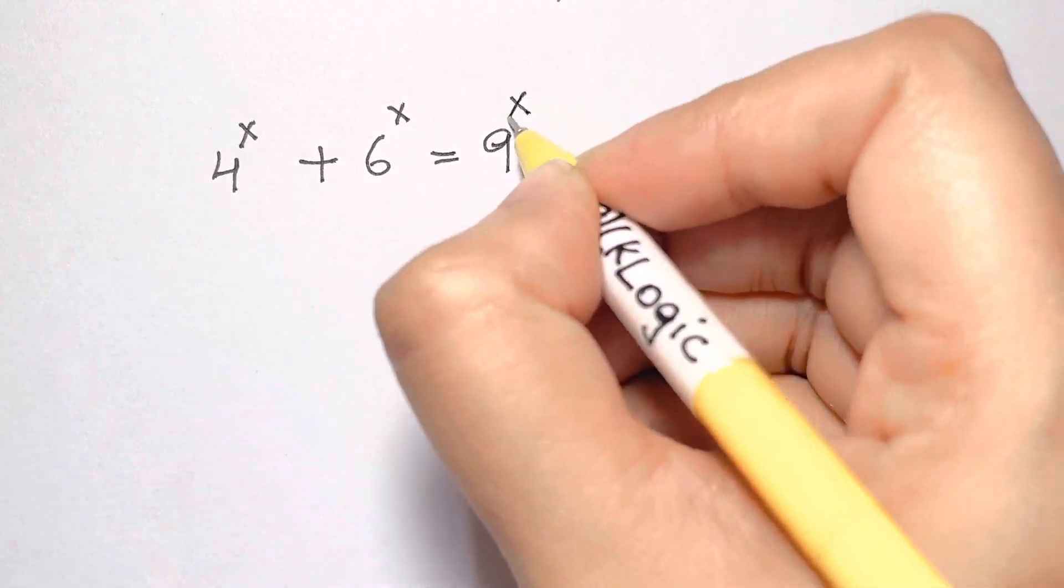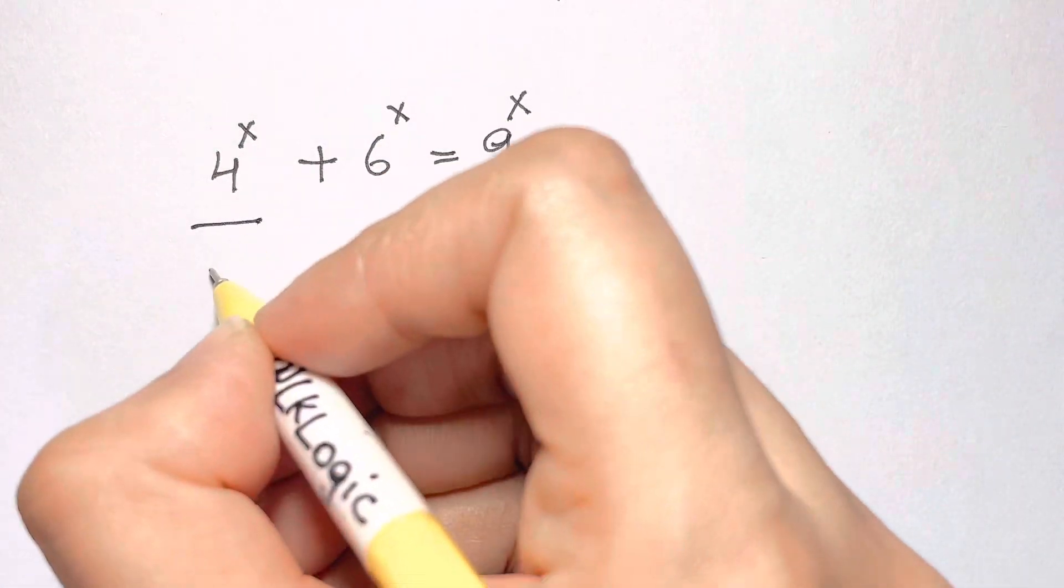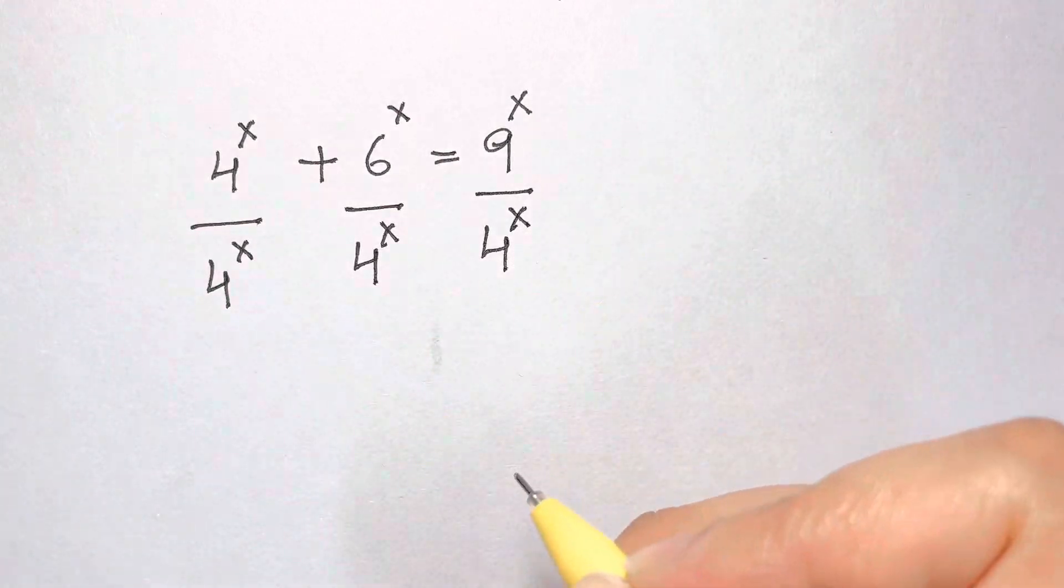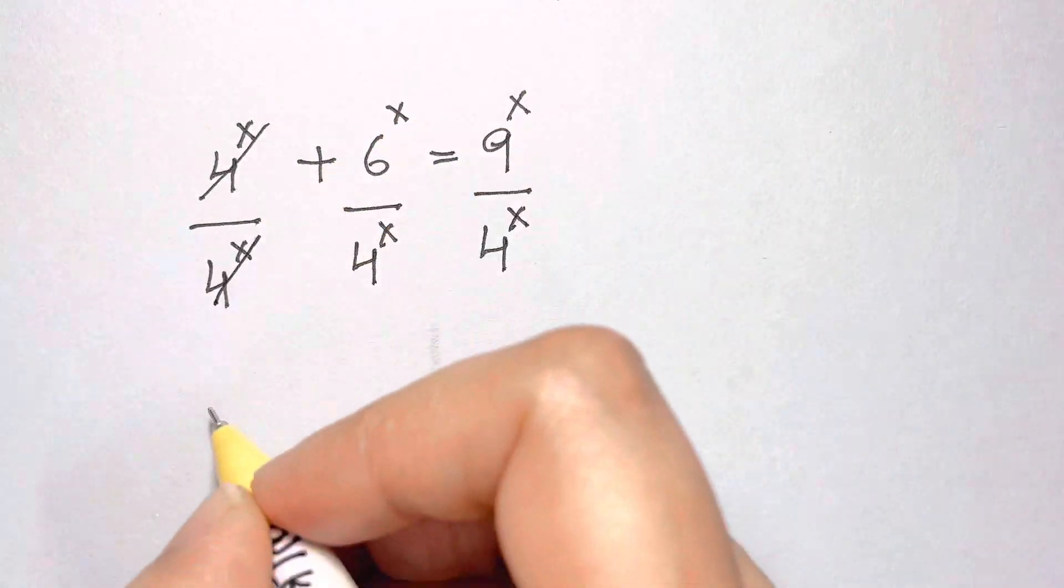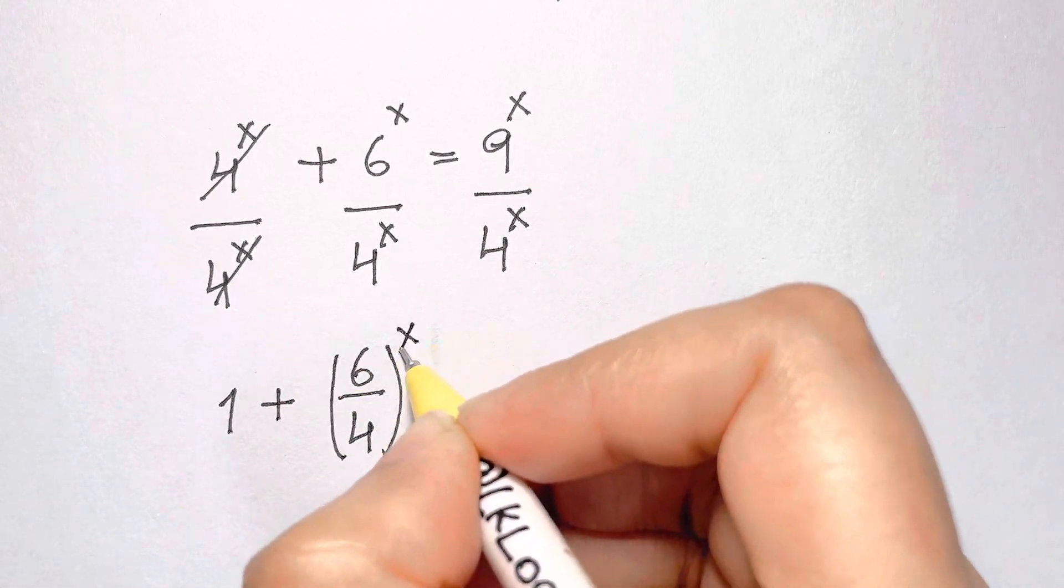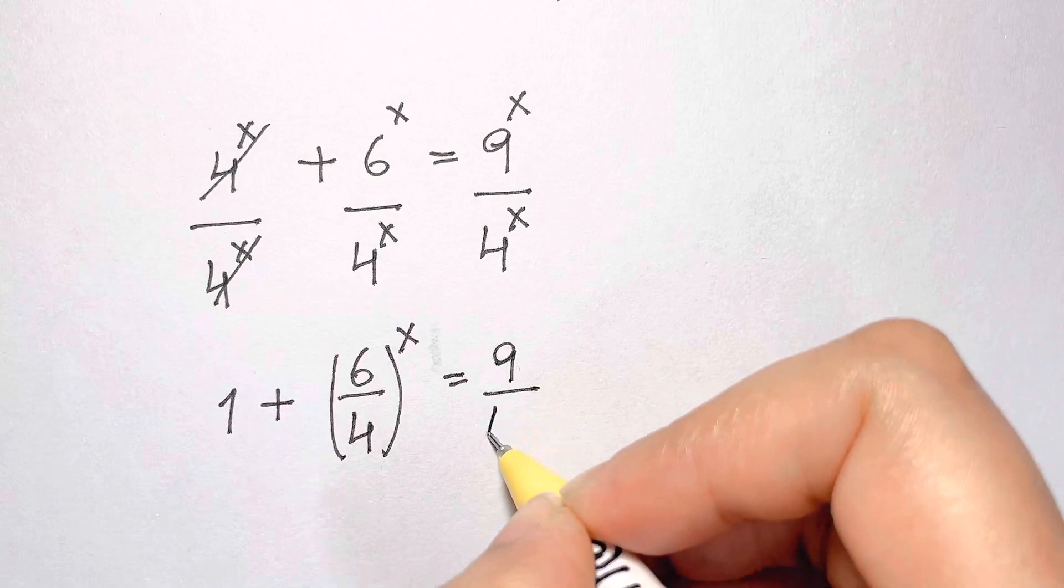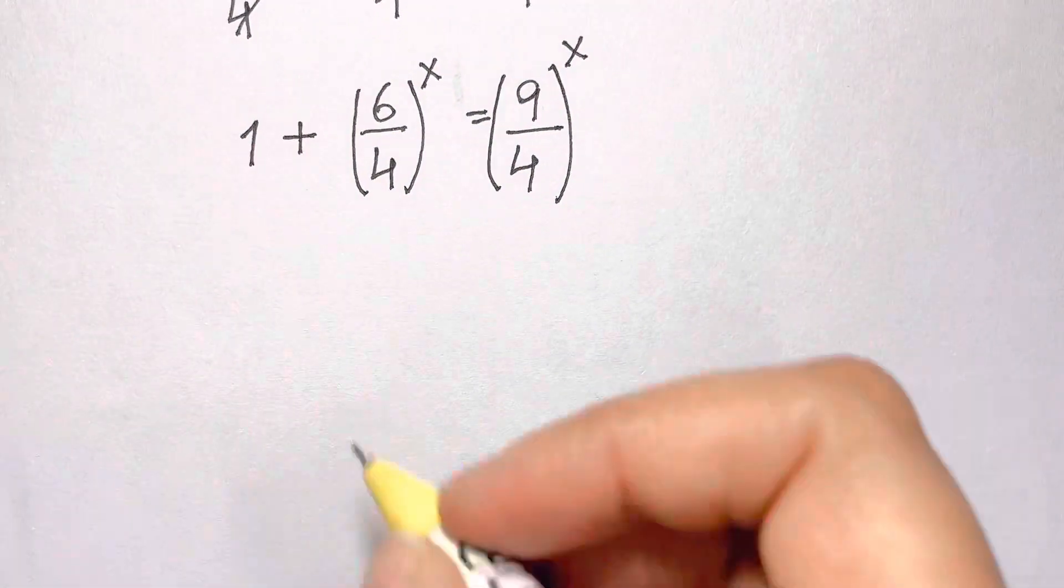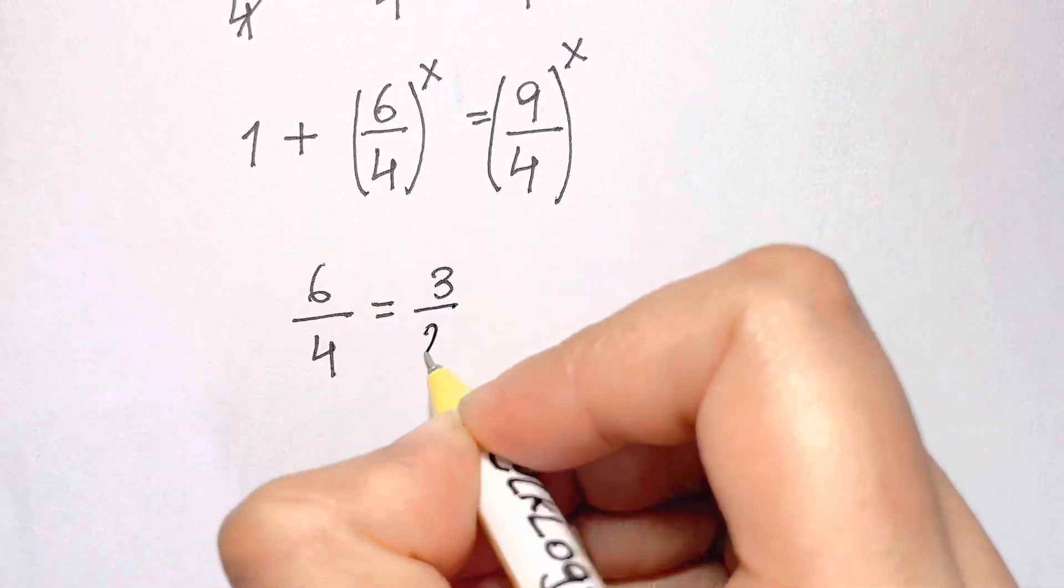We'll get started by dividing each term by 4 to the power of x. The first term simplifies to be 1. The next term becomes 6 over 4 all raised to the power of x, and the third term becomes 9 over 4 all raised to x.